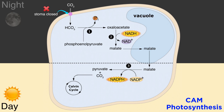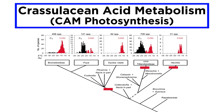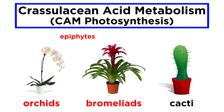Then, during the day, the stomata close to conserve water, and the carbon dioxide-storing organic acids are released from the vacuoles of the mesophyll cells into the Calvin cycle. This keeps photosynthesis going in CAM plants during the day, even though the leaf's stomata are closed. Like C4 carbon fixation, CAM photosynthesis evolved convergently several times in different plant clades, though it is more common in epiphytes such as orchids and bromeliads, and succulents like cacti.